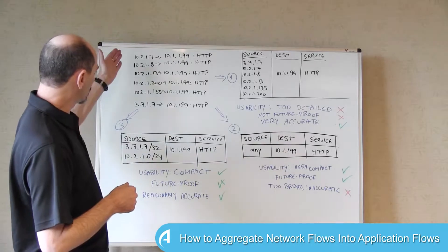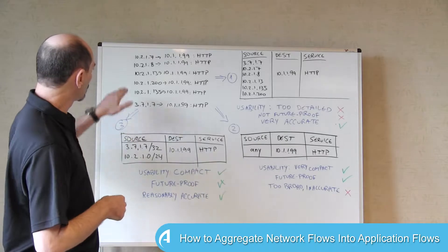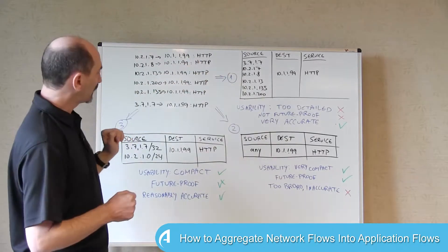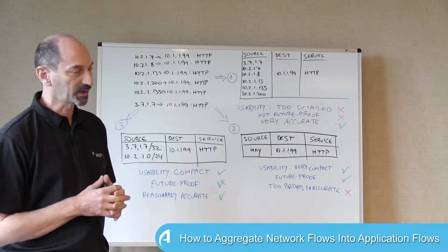So our starting point is, let's say, a NetFlow capture. So a list of records, source, destination, and service, which we want to represent as flows supporting some application.